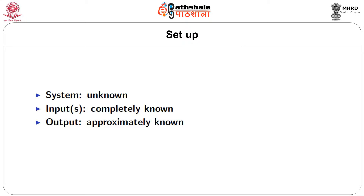When we put these inputs into the system, we will get some outputs. The output combines the effect of the inputs as well as the behavior of the system. These outputs are going to be measured, so they are only approximately known. We shall apply the theory of linear models to relate the output with the input and, in the process, estimate the unknown quantities or parameters of the system.